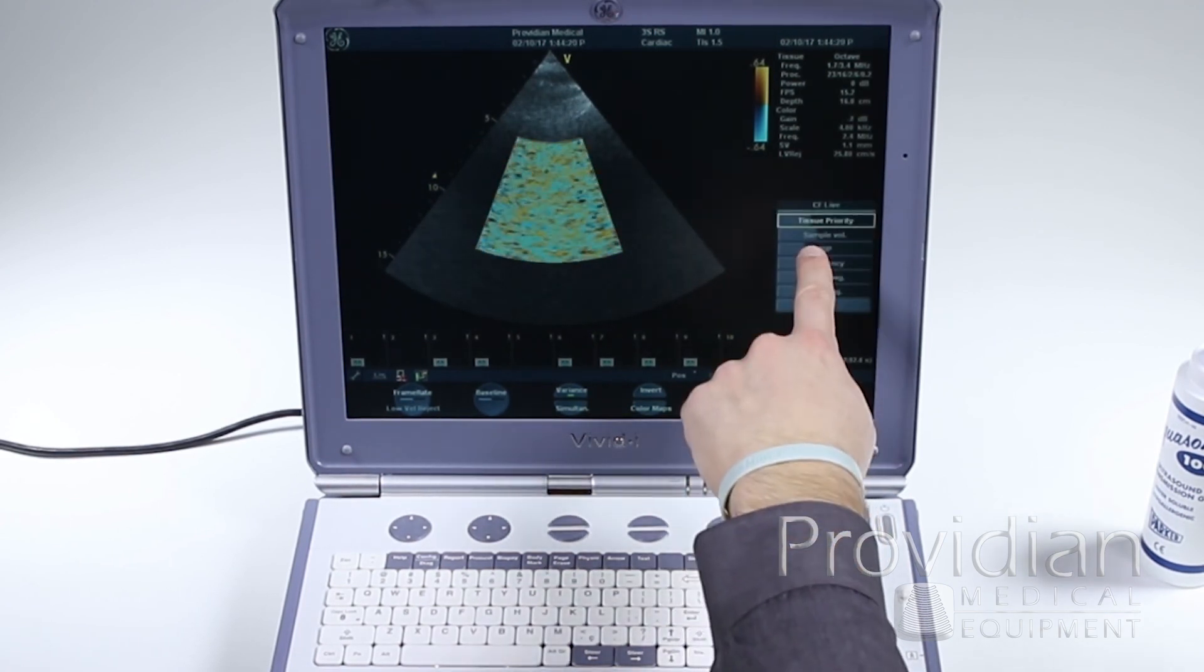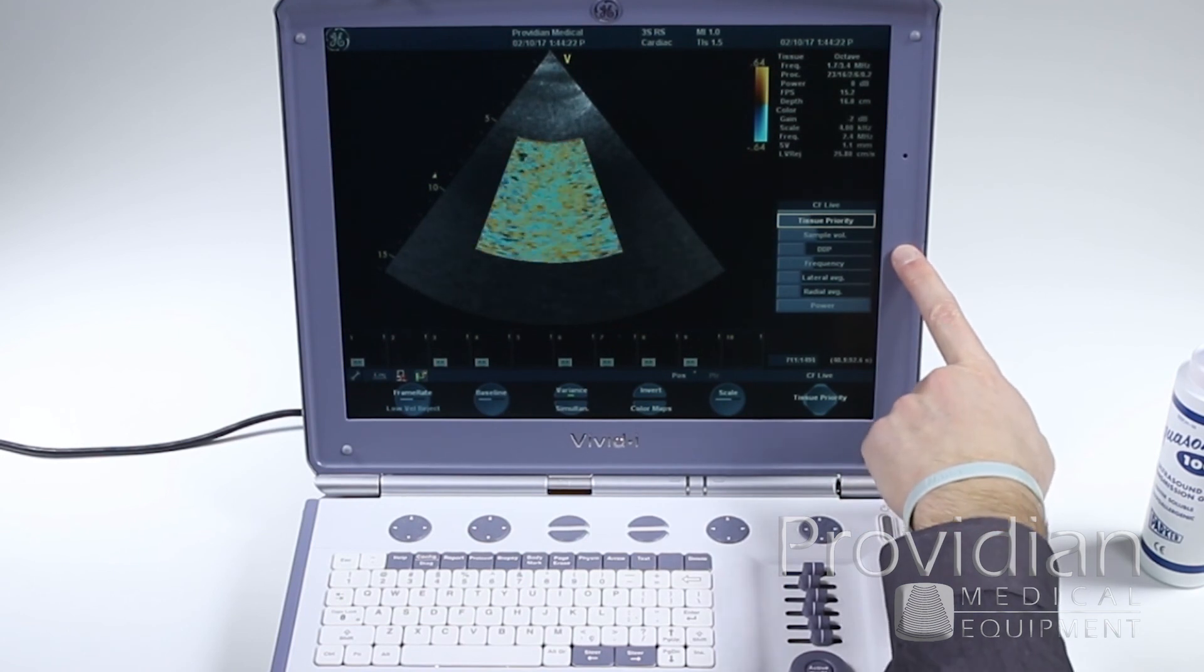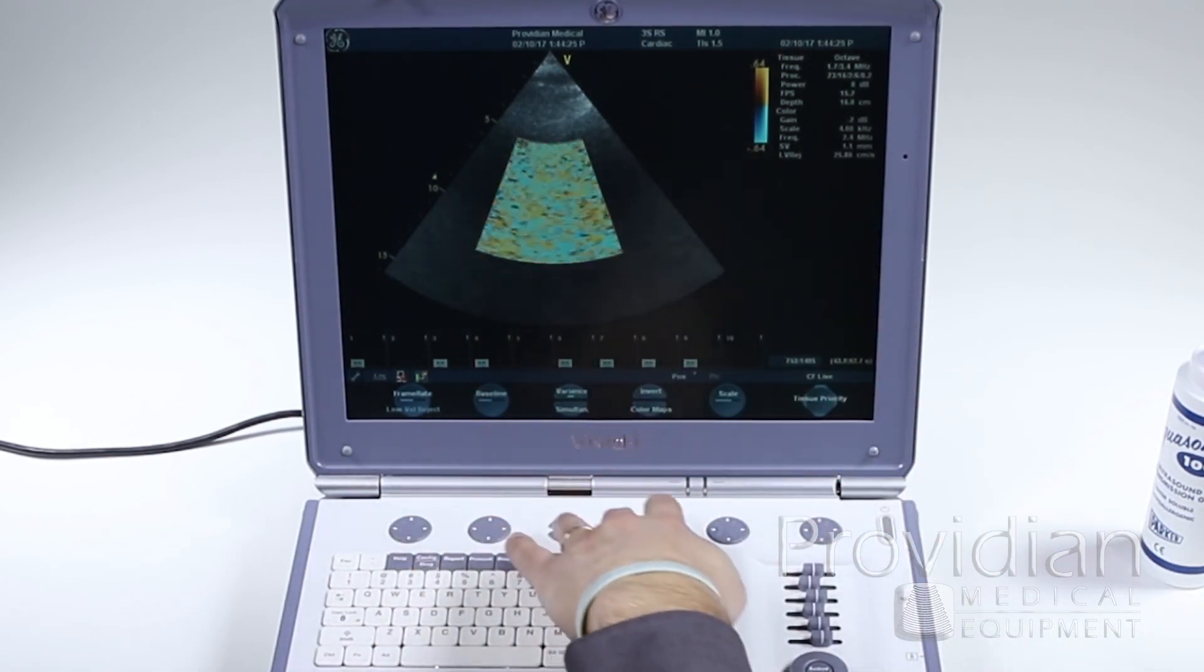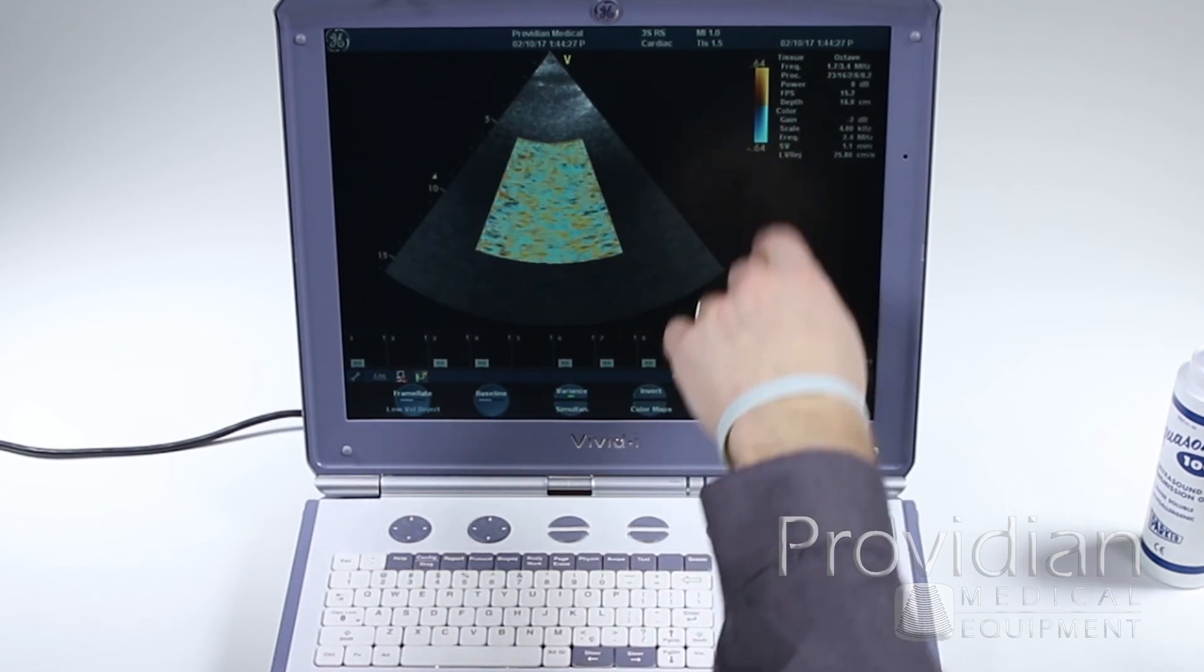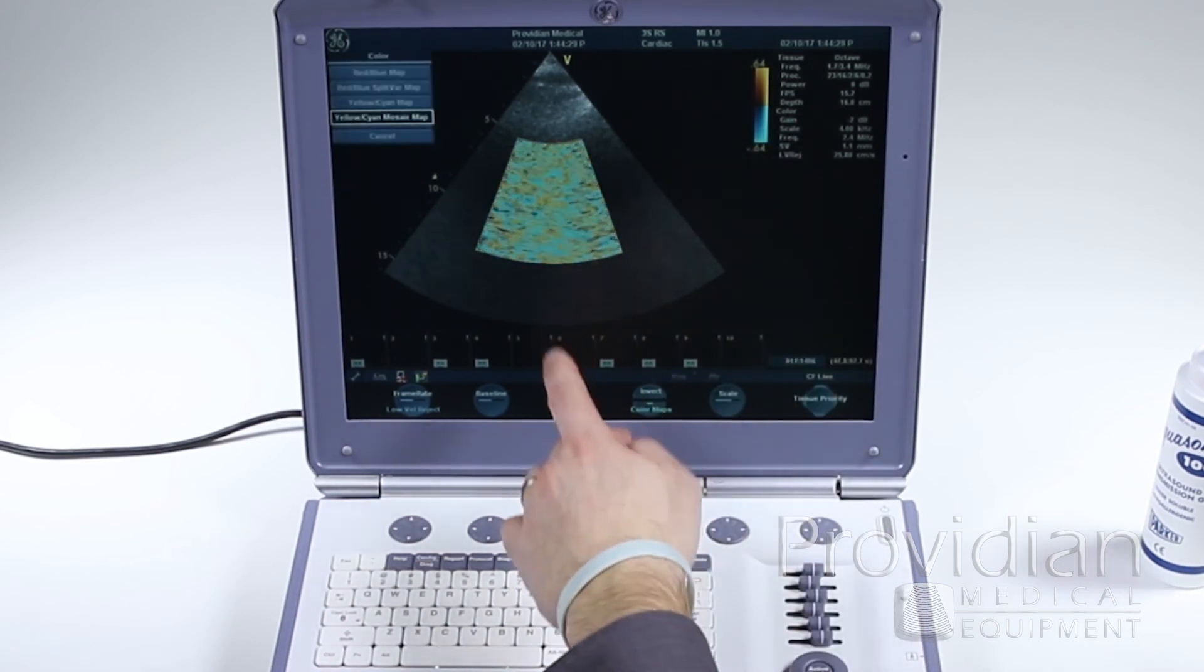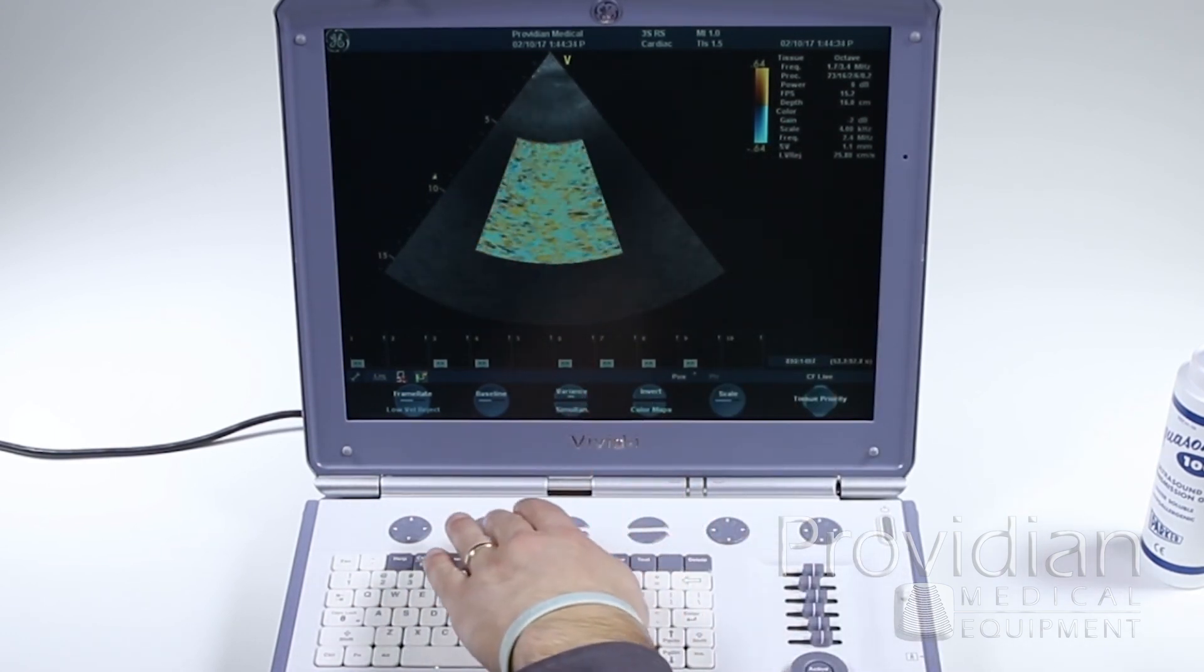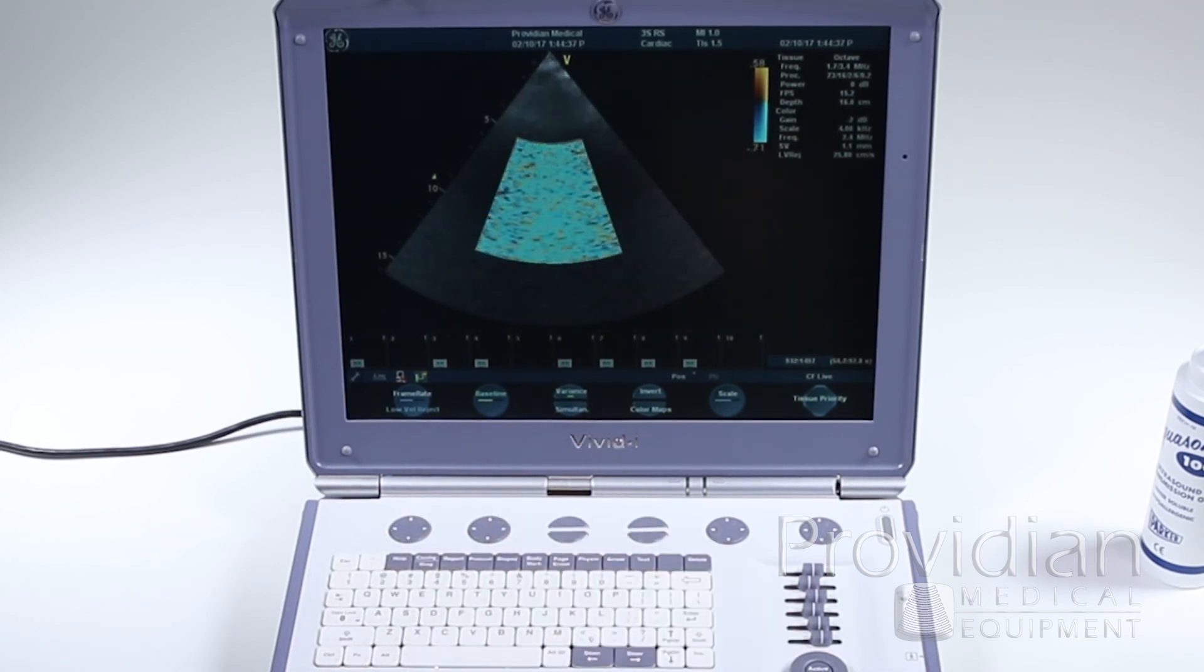Again, you have these hidden controls as well for sample volume, frequency, averaging power. Your scale is here. Your color maps, you can adjust those there. Change your baseline, etc.